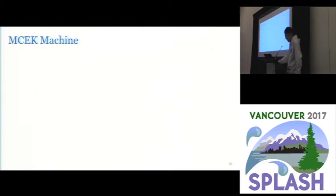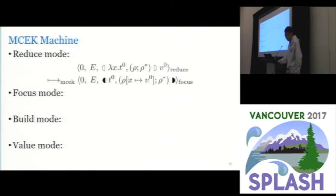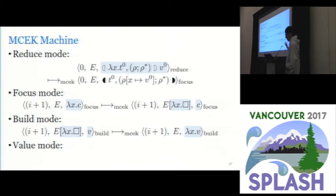This machine operates in four modes. For the reduce mode, it reduces the control stream which is a redex. For the focus mode, it searches downward into the context for redex. For the build mode, it returns the control stream which is a value back to the evaluation context. For the value mode, it is just a result of doing computation of executing the machine.